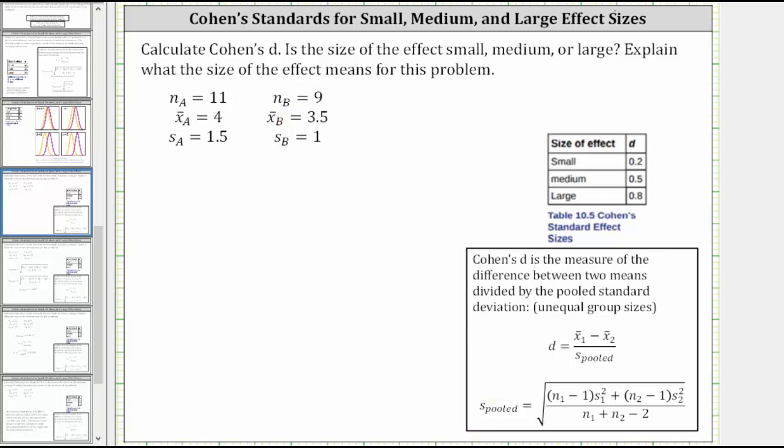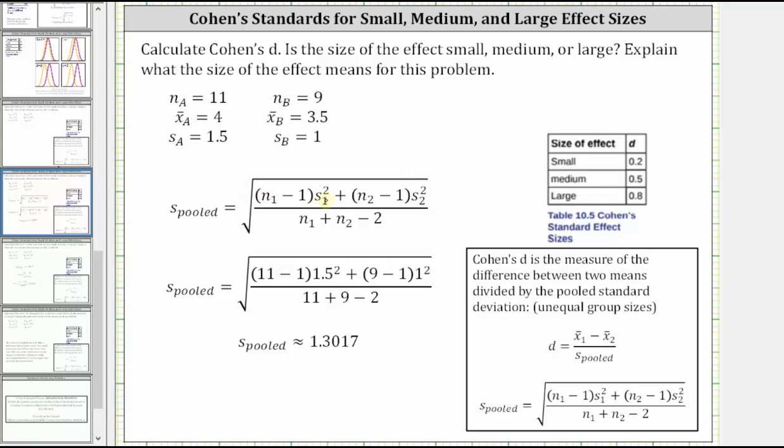We'll begin by determining the pooled standard deviation for unequal group sizes because we have a sample size of 11 and a sample size of 9. I've already set this up on the next slide, where I've replaced n sub 1 and s sub 1 with n sub a and s sub a, and n sub 2 and s sub 2 with n sub b and s sub b, which is already shown here below.